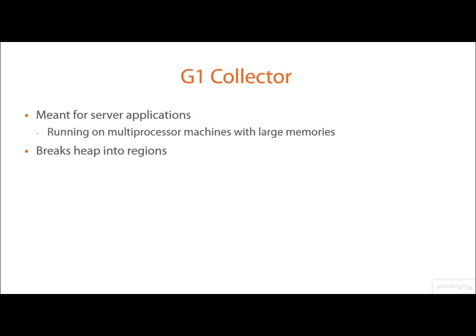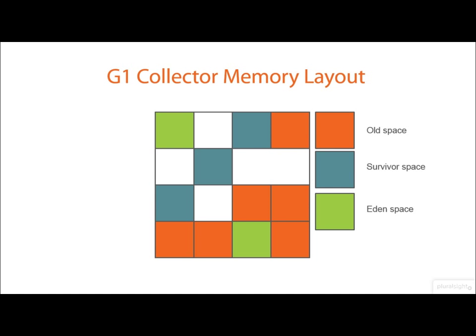Instead of simply having an Eden region and a tenured region — a young memory and an old memory — we now break the entire memory space down into regions, and memory is allocated across those regions. It still has the concept of Eden, survival, and tenured spaces, but this concept is managed very differently by the G1 collector.